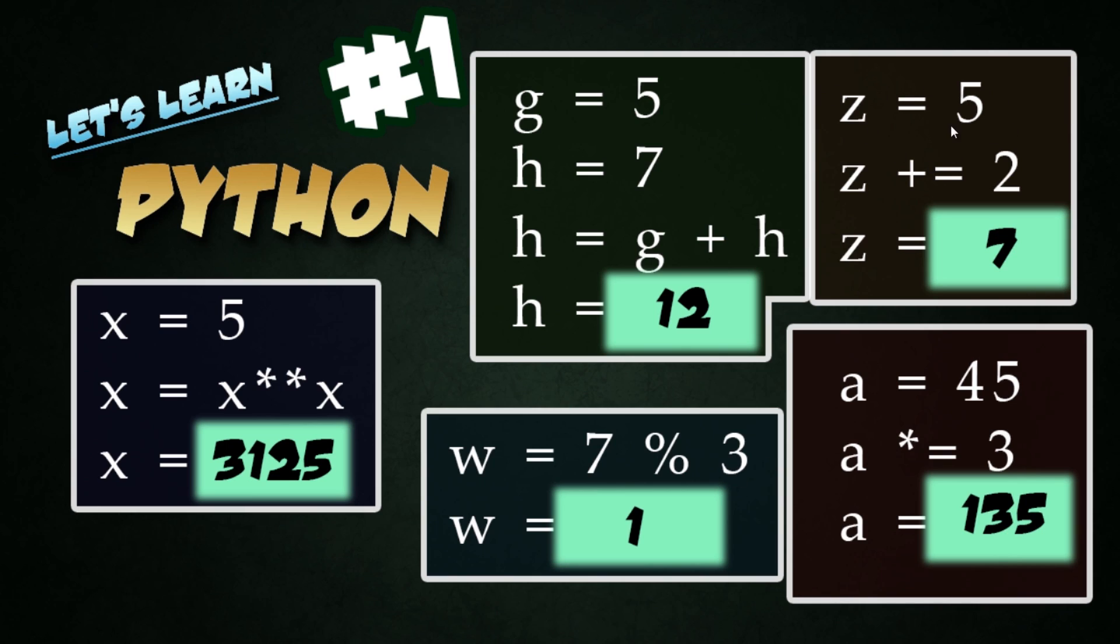On the right-hand side we have z equals 5, and then z plus equals 2. So this is going to add two to five to give us a value of 7. This is actually a very efficient way to add, multiply, divide in values to a given variable. Next we have a equals 45, and then we have the times equal, and then 3, so 45 times 3 is going to be 135.